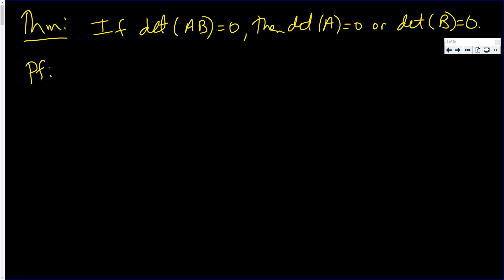In this video, I'm going to prove a simple theorem. If the determinant of AB equals zero, then the determinant of A is zero or the determinant of B is zero.